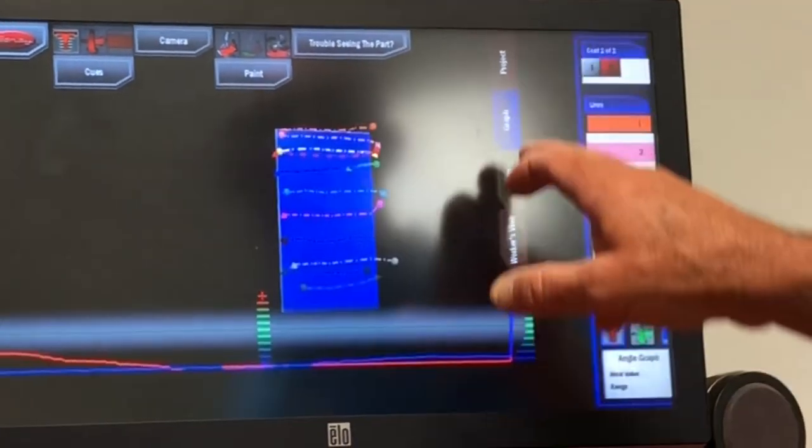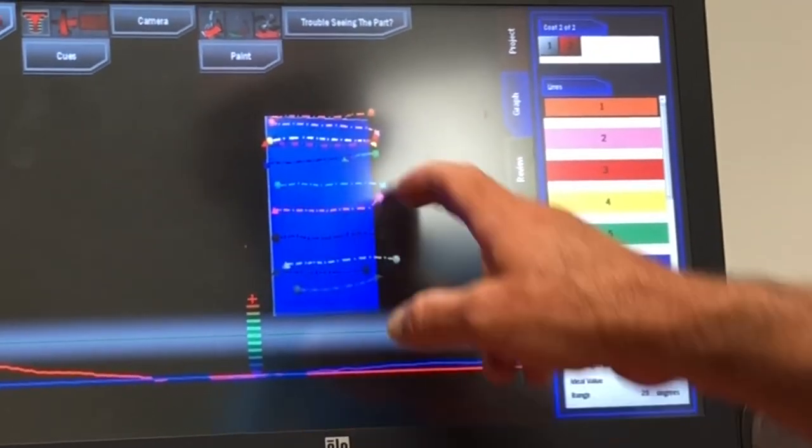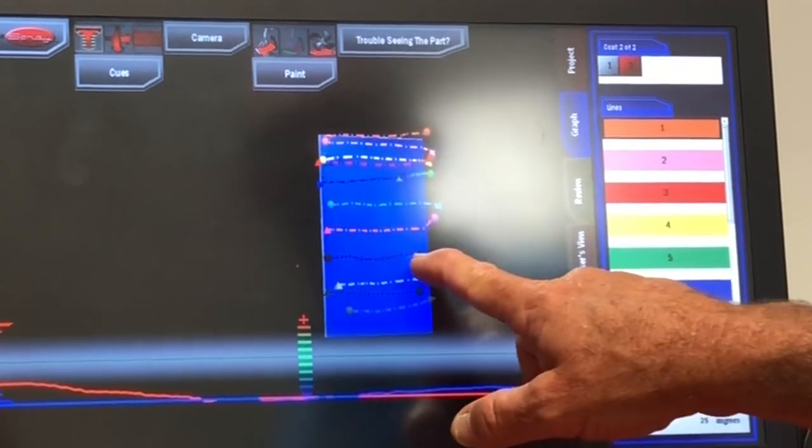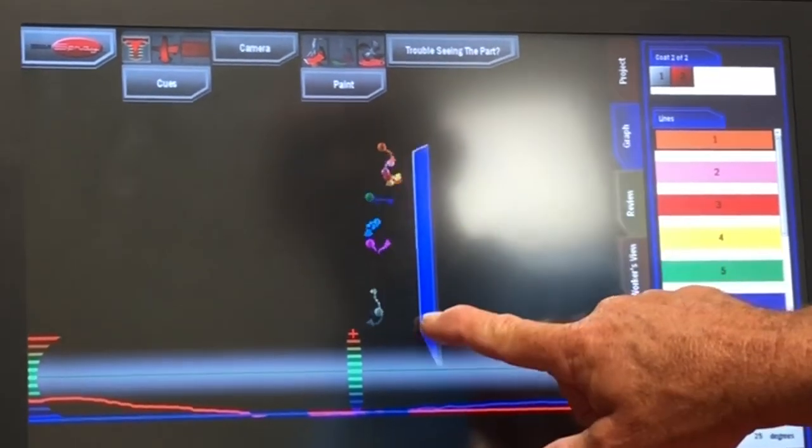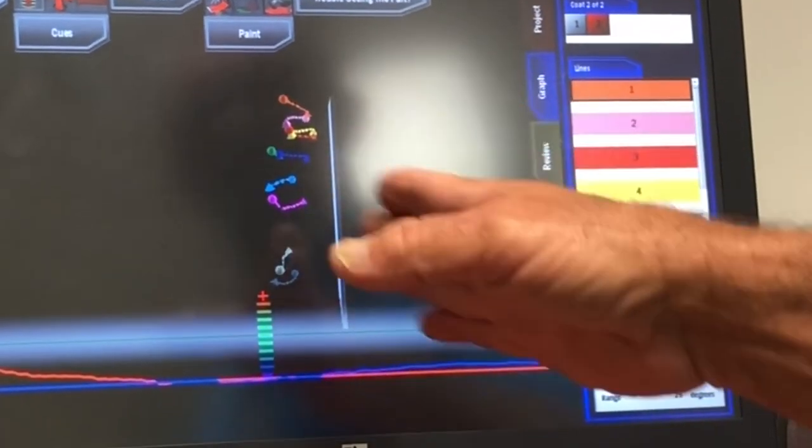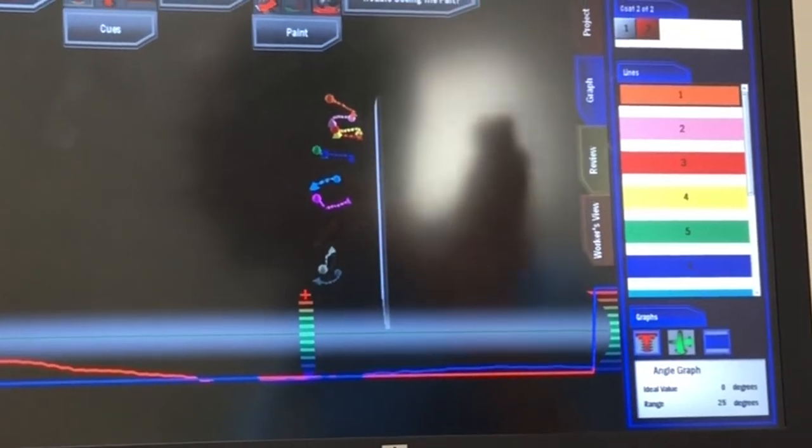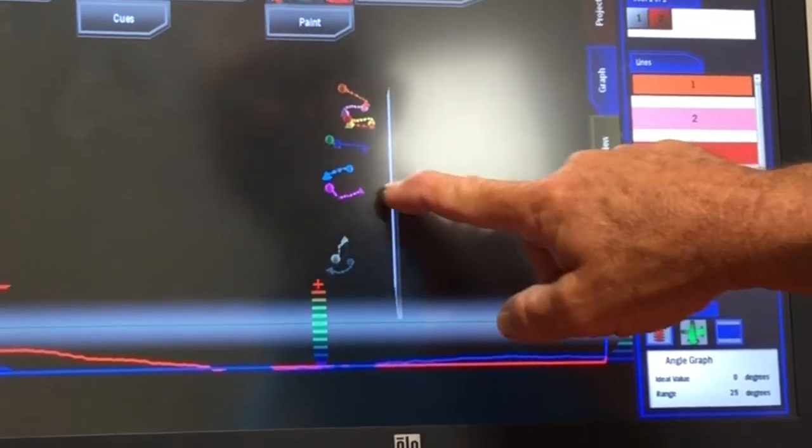I can go to a graph, and that tells me every pass he made with that gun - where he started, where he triggered it, where he stopped and redirected. As you can see, it's a little closer at the top than at the bottom. It should be even because he should stay perpendicular with the panel at all times.